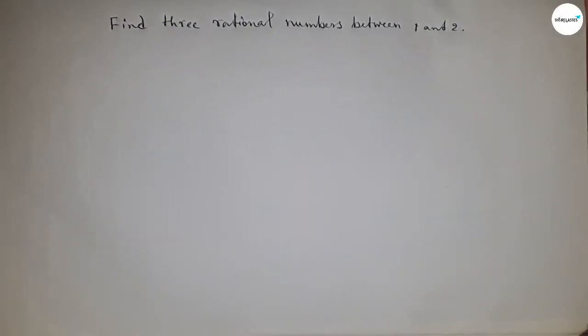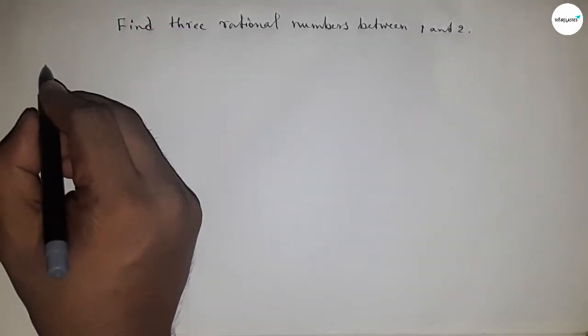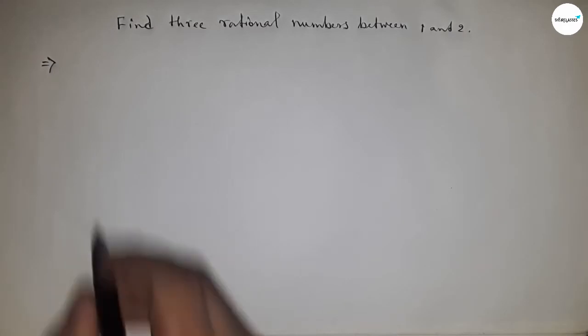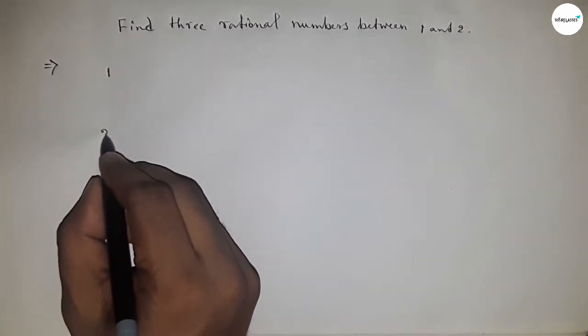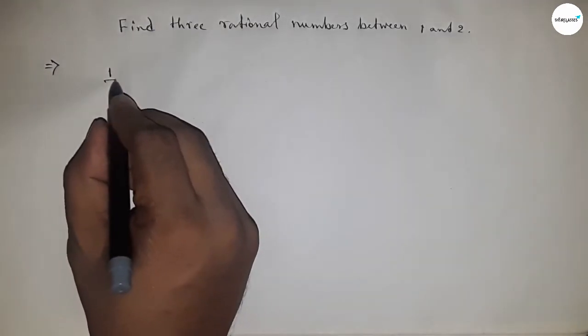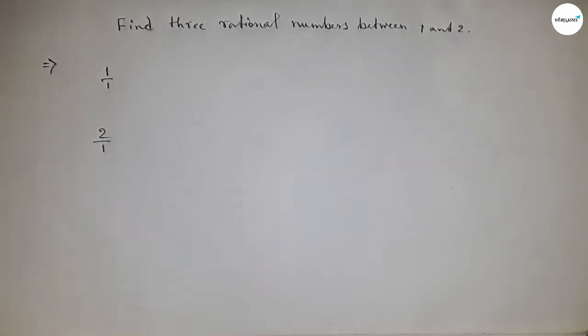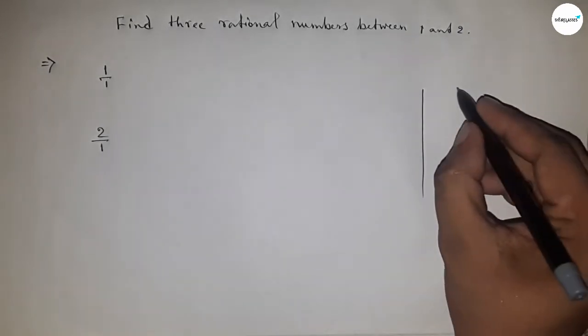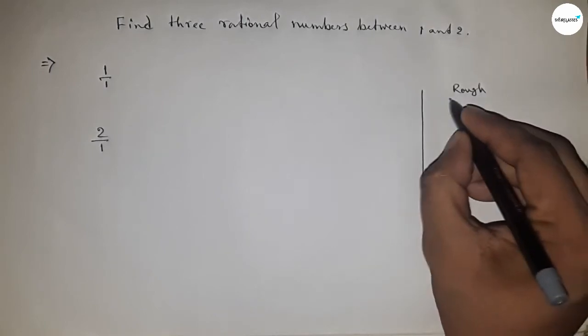So in this video, finding three rational numbers between 1 and 2. First of all, write down here the numbers 1 and 2. Then we can write 1 by 1 and 2 by 1. Now roughly discussing some calculations.